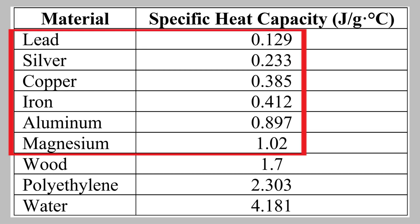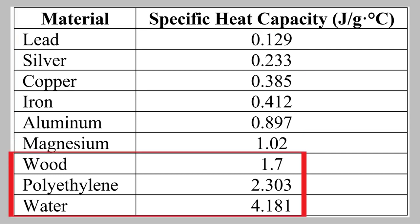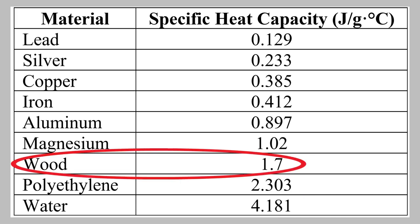On the other hand, materials like wood, plastic, and water have much higher specific heat capacities, which means it takes a lot of energy to raise their temperature. That's why you feel safe touching the wooden spoon. Even if you've never heard of specific heat capacity, you know from experience that a wooden spoon is unlikely to be too hot to touch.